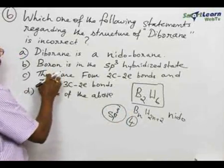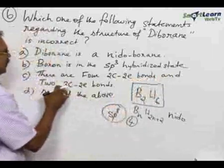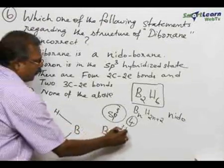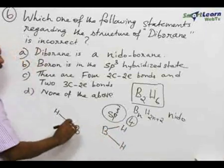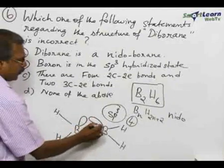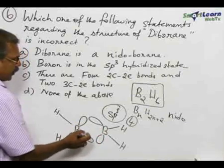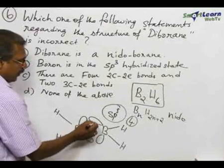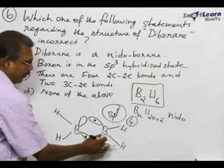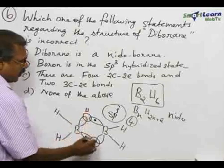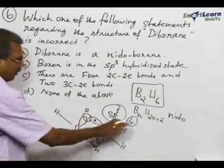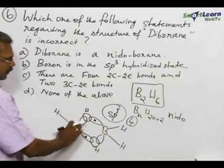Statement B is also correct. There are four two-center two-electron bonds and two three-center two-electron bonds. Four hydrogens are bonded to the two boron atoms with normal bonding. Two sp3 hybrid orbitals remain — one with an electron and one empty on each boron. The sp3 hybrid orbital with the electron overlaps with the empty orbital through the spherical orbital of hydrogen, forming the banana bond. These two bonds lie above and below the plane containing the two boron and bridging hydrogen atoms, and this is the three-center two-electron bond.